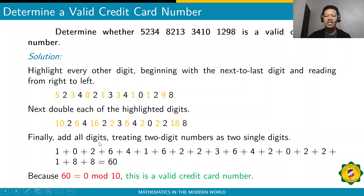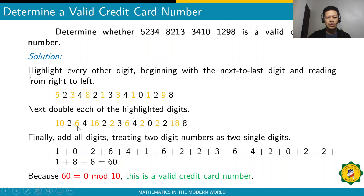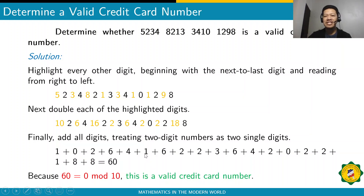Now add all the digits, treating any two-digit numbers as two individual digits. So we have: 1 plus 8, plus 2, plus 6, plus 4 (from 1+... wait), plus 1 plus 6, plus 2 plus 2, and so on. The sum comes out to 60. Taking 60 modulo 10 gives 0 — when you divide 60 by 10, the remainder is 0. Since the remainder is 0, it satisfies the algorithm, and this number is a valid credit card number.